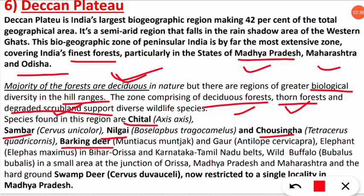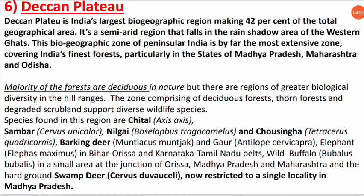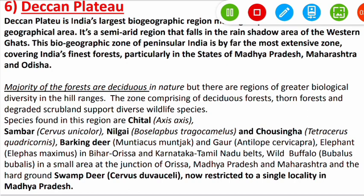Key fauna of the Deccan Plateau includes Gaur and Elephant (Elephas maximus), which are present mostly in the Bihar, Odisha, Karnataka, and Tamil Nadu belts. Swamp Deer is also an important species — it is now restricted to a localized area in Madhya Pradesh.